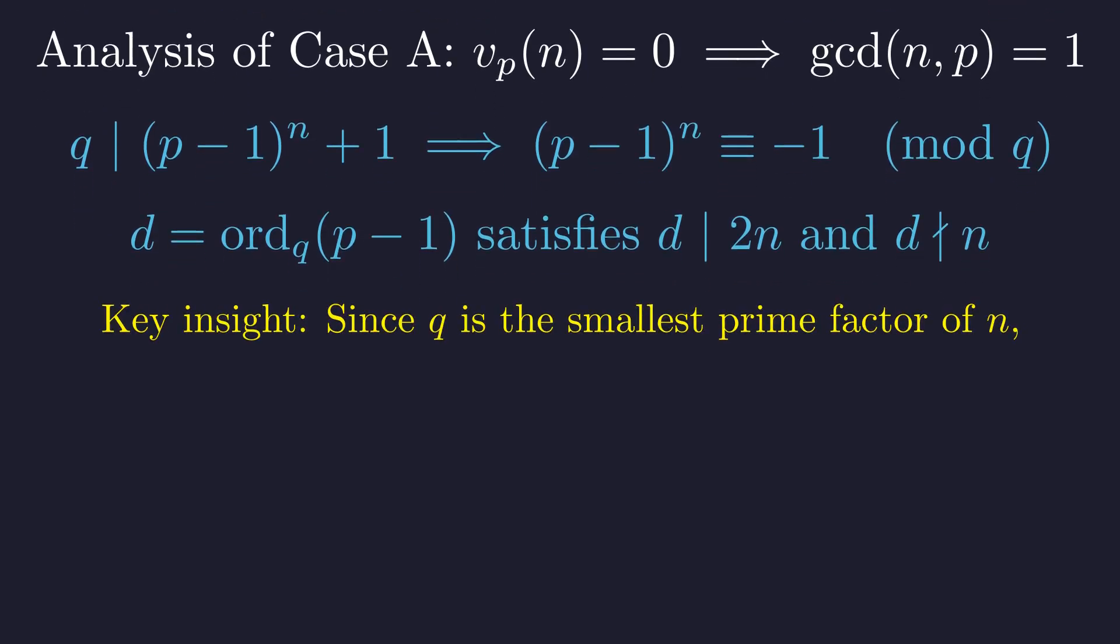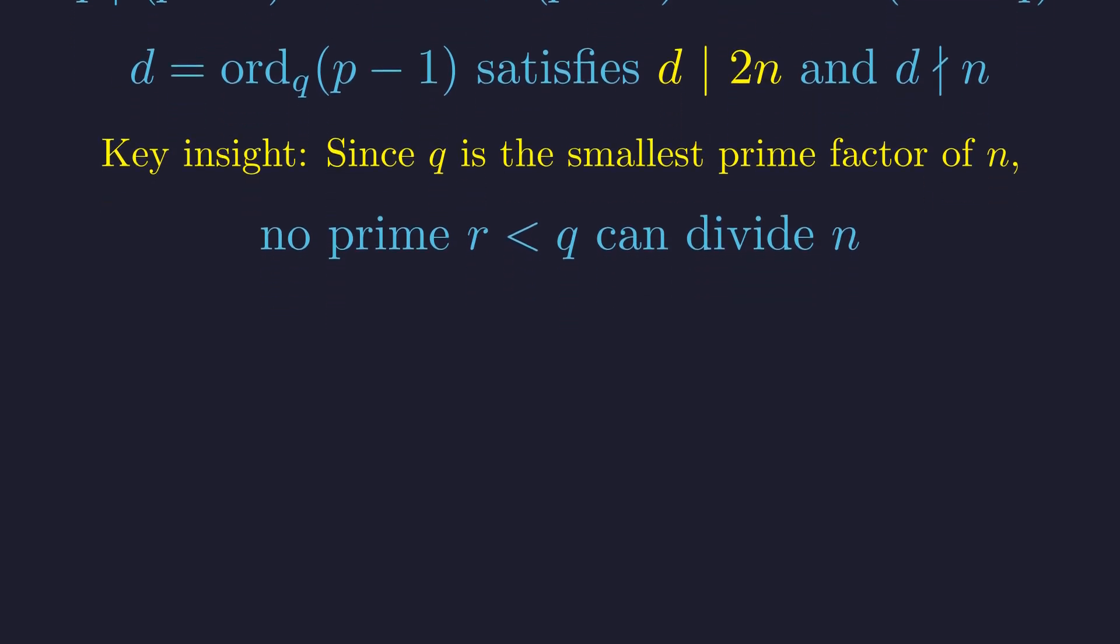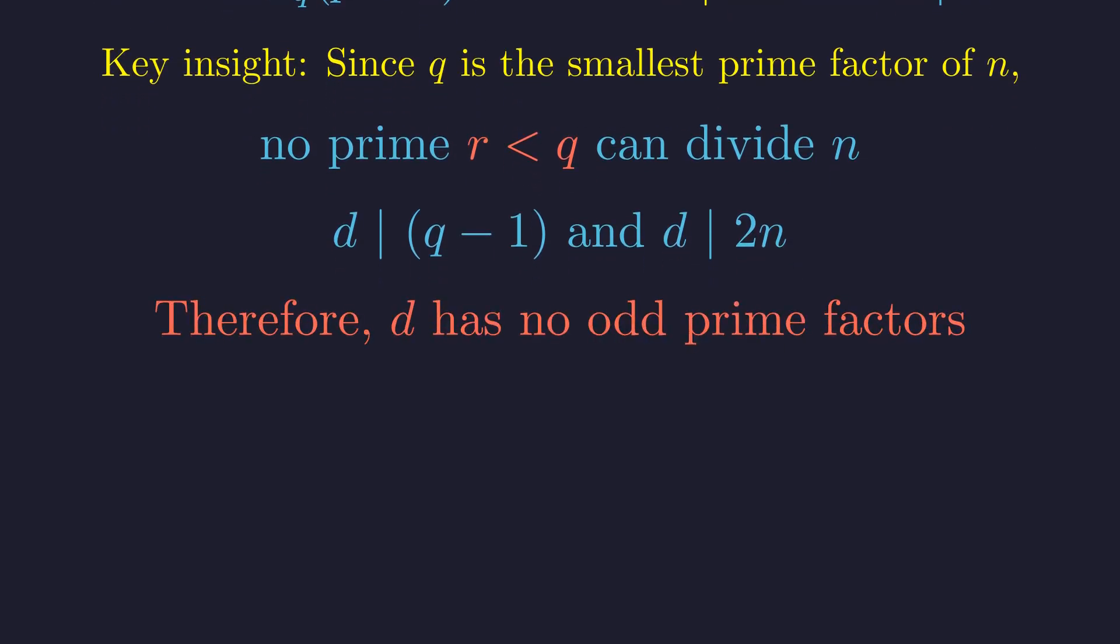The definition of q as the smallest prime factor of n is a powerful constraint. This means no prime number smaller than q can be a factor of n. We also know from Fermat's Little Theorem that the order d must divide q-1. So, d divides both q-1 and 2n. Consider an odd prime factor r of d. Since d divides q-1, r must be less than q, but since d divides 2n, r must divide n. This is a contradiction, as no prime less than q can divide n. Therefore, d cannot have any odd prime factors. This forces d to be a power of 2.